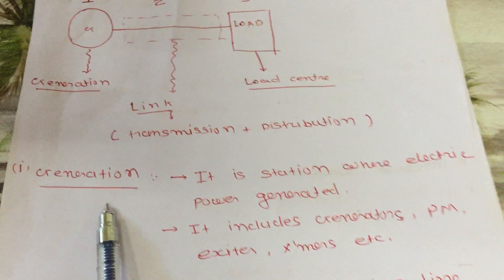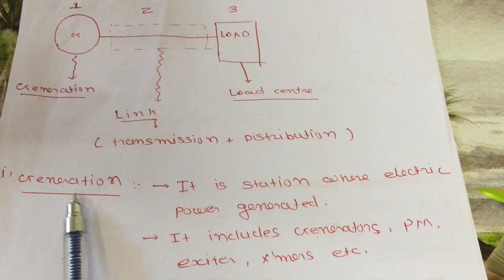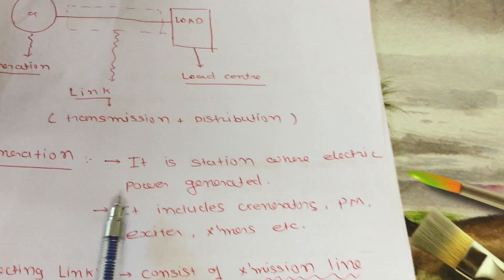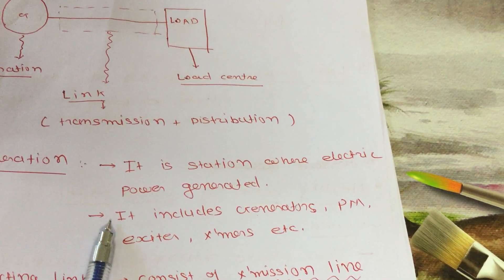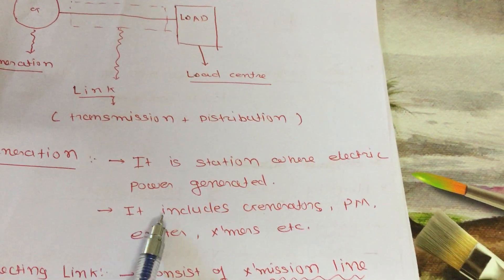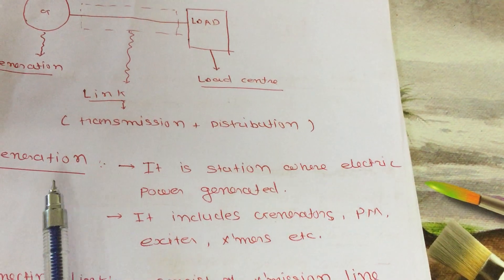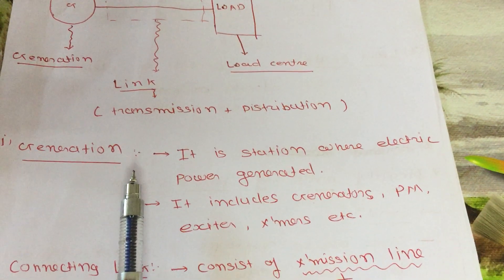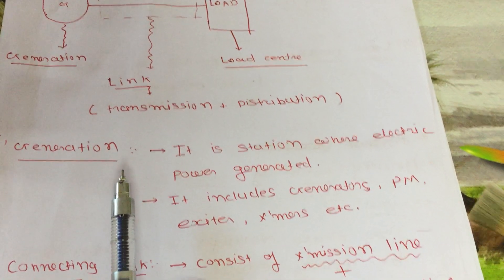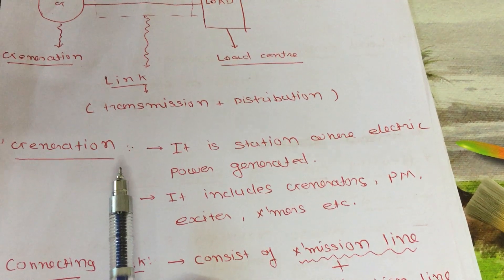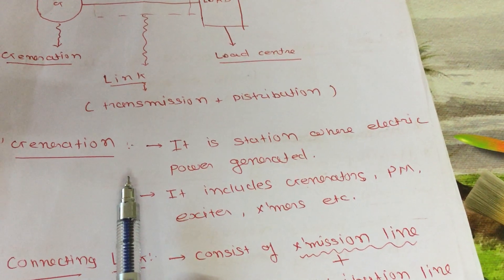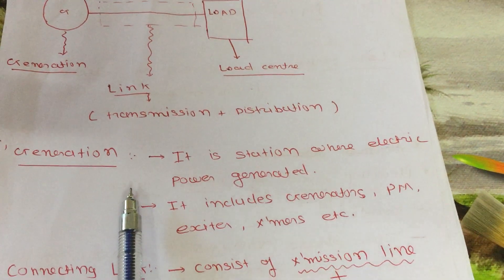Now we will see some notes. The first section is the generation section — it is the station where electric power is generated. It includes generators, prime movers, exciters, and transformers. In the generation section, we use different types of generators like wind, hydro, and thermal generators, according to which energy source is used to rotate the prime mover.